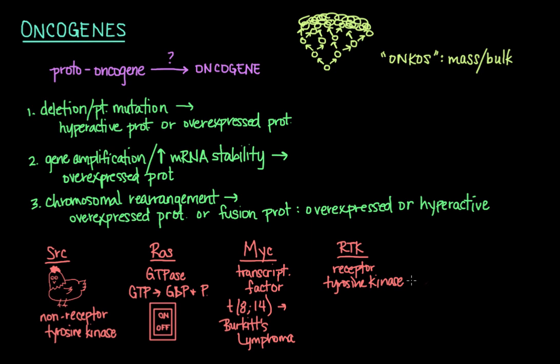A cell surface receptor tyrosine kinase receives a signal from outside the cell and propagates that signal into the cell by adding phosphate groups to target proteins on tyrosine residues. These can cause cancer by turning a receptor constitutively — or permanently — on in the absence of signals from outside the cell. Well-known examples of receptor tyrosine kinases include vascular endothelial growth factor (VEGF), epidermal growth factor receptor (EGFR), and platelet-derived growth factor (PDGF).